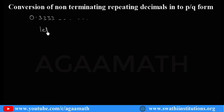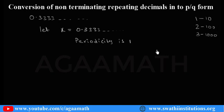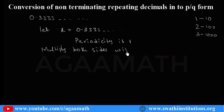Let x equal to 0.3333 and so on. Here, period is one and periodicity is one. As periodicity is one, we have to multiply this equation on both sides with 10. Periodicity is 2: multiply with 100. Periodicity is 3: multiply with 1000. Remember this. So here, periodicity is one, so multiply both sides with 10.